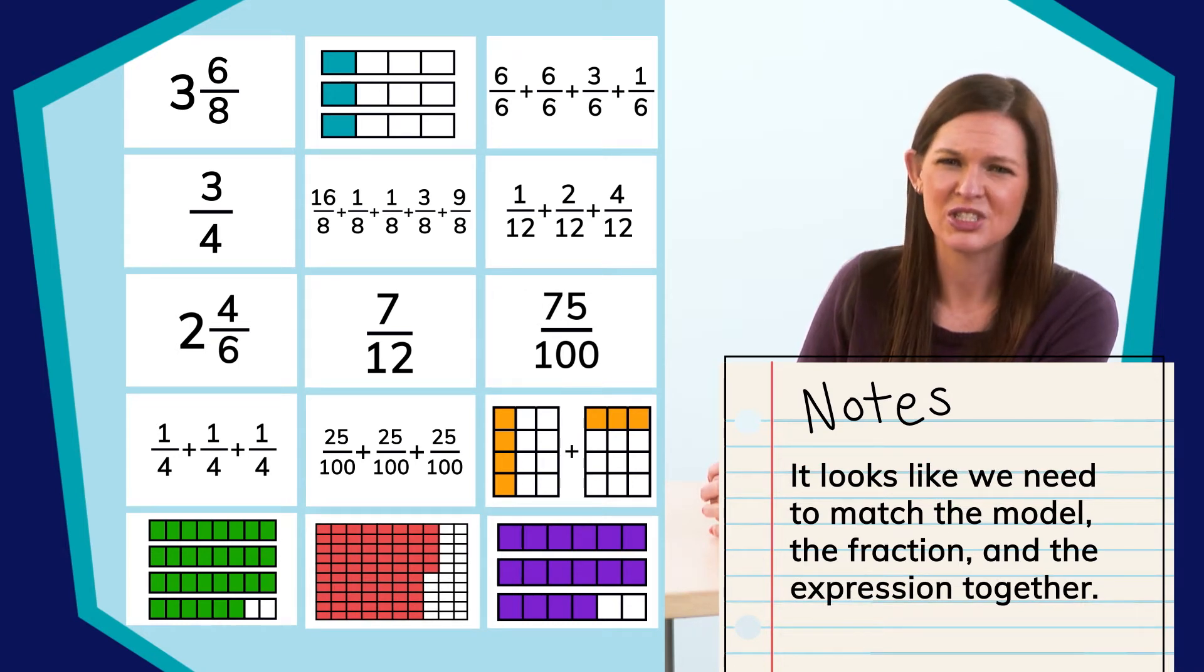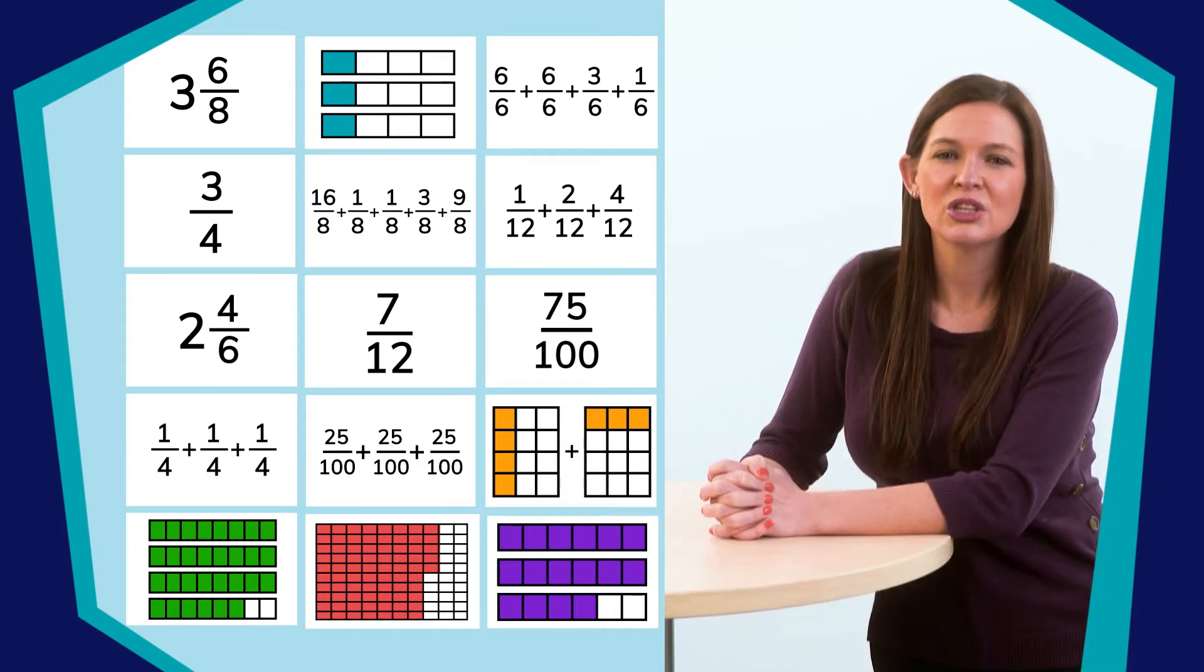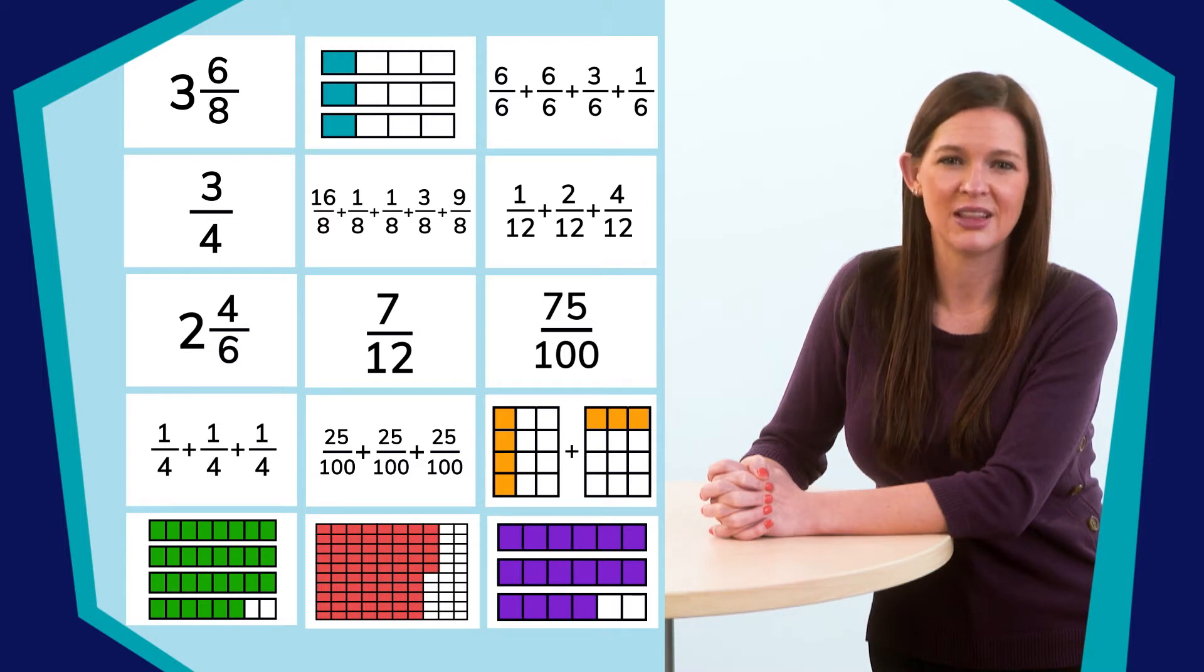Where do you think we should start? I agree. We should look at the fractions and try to match the models and the equations to them. Let's see. We have 2 and 4 sixths, 3 fourths, 75 hundredths, 3 and 6 eighths, and 7 twelfths.